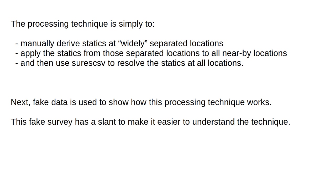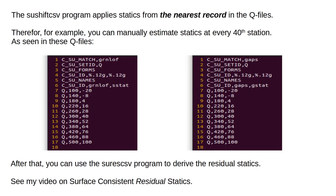This fake survey has a slant to make it easier to understand the technique. The SU-SHIFT-CSV program applies statics from the nearest record in the queue files. Therefore, for example, you can manually estimate statics at every 40th station, as seen in these queue files.